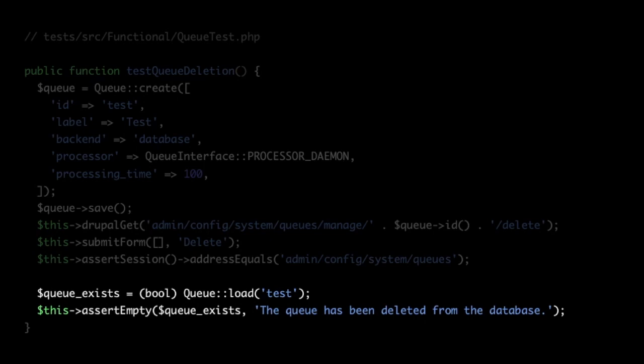In a functional test we extend BrowserTestBase and can do things like placing blocks on a page, creating users with specific permissions and logging them in. We create our queue in the test method, then call drupalGet to make a GET request to the admin config page for the queue, submit forms or click delete, and assert we're on the right page afterwards. Assertions can check for empty values, use assertCount to check how many items are in an array, and include an optional descriptive message.